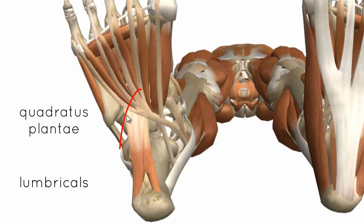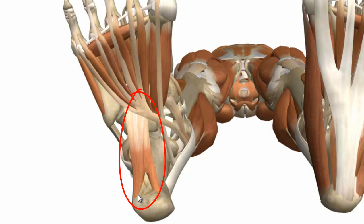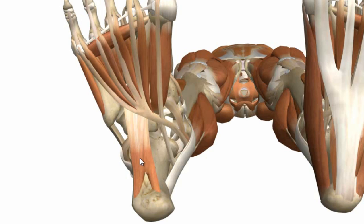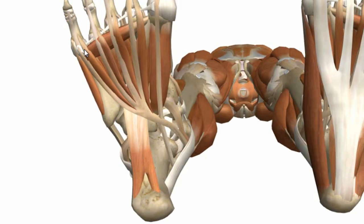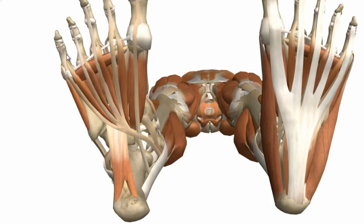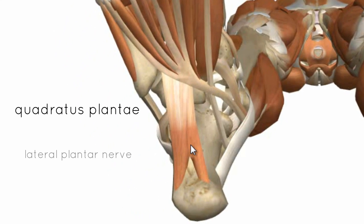The quadratus plantae muscle lies posteriorly and has two heads — a medial and a lateral head. The lateral head originates on the lateral process of the calcaneal tuberosity, and the medial head originates medially on the calcaneus. These two heads form a tendon that inserts onto the lateral side of the flexor digitorum longus tendon, helping it flex the lateral toes (two to five). This muscle is innervated by the lateral plantar nerve.